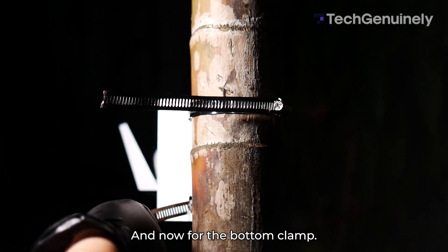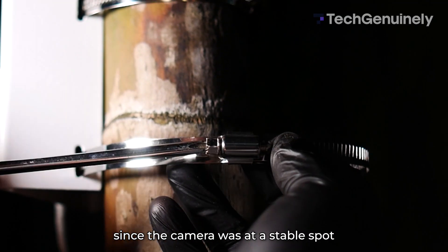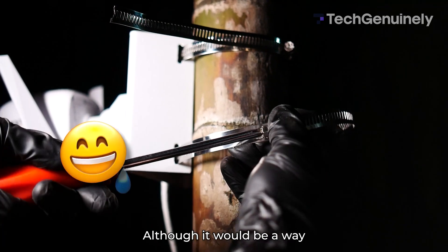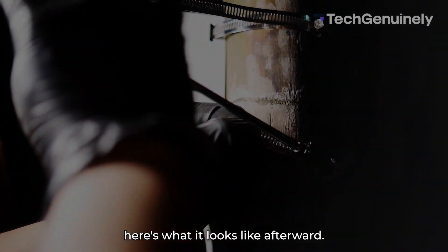And now for the bottom clamp. Here's when I cut it shorter. Screwing it again at this point was much easier since the camera was at a stable spot thanks to the tightened upper clamp, although it would be a way quicker job with a power drill. And after tightening, here's what it looks like afterward.